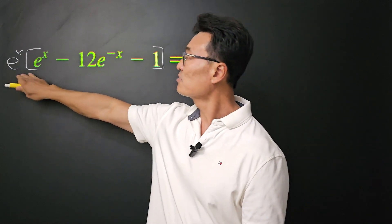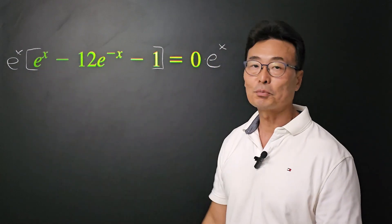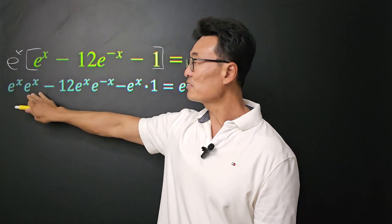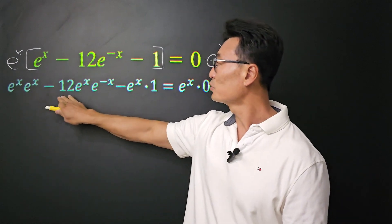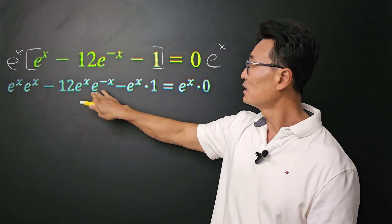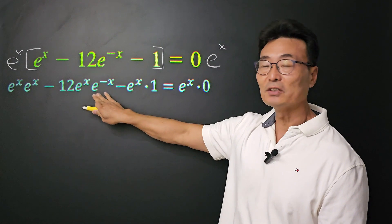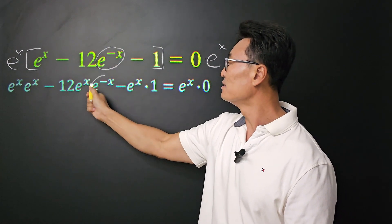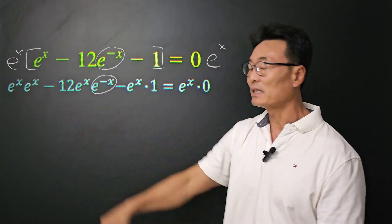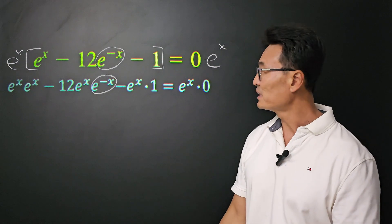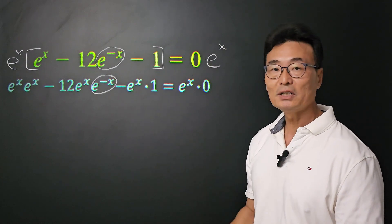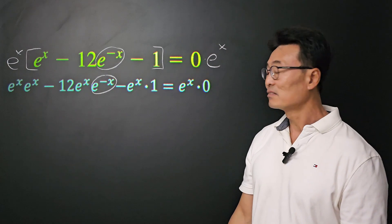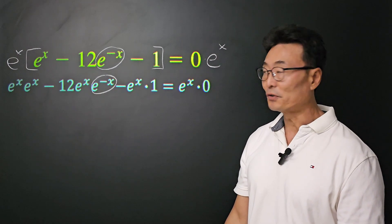Once I take that e to the x and multiply into the parentheses, we get e to the x times e to the x, minus 12 times e to the x times e to the negative x. And notice that e to the negative x is that e to the negative x, minus e to the x times 1, is equal to e to the x times 0.